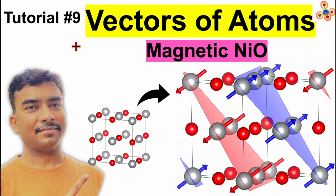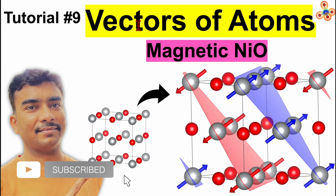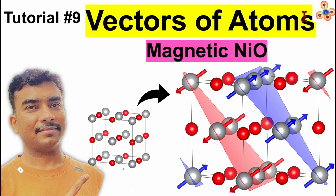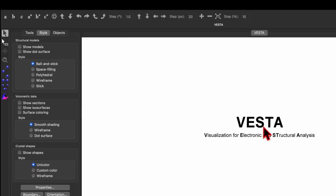In this tutorial number nine, I want to show how to visualize or create a vector for an atom with the VESTA software. We will consider the example of magnetic nickel oxide, which shows antiferromagnetic properties. Open the VESTA software, then go to the file and click on open.